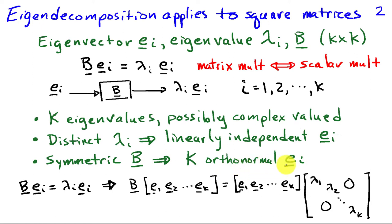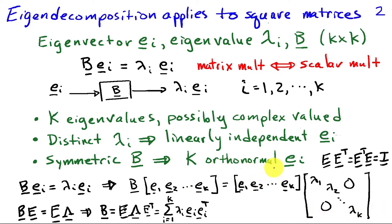Suppose that we have a set of orthonormal eigenvectors. Starting from the relationship B times E_i equals lambda_i E_i, and stacking all these equations together for i equals 1 through k, we get B·E1 = E1·lambda_1, B·E2 = E2·lambda_2, and so on. Because these eigenvectors are orthonormal, we can collect these E's into a matrix capital E. This relationship becomes B times the matrix E equals E times the diagonal matrix lambda, where lambda has the eigenvalues on the diagonal. Since these E_i's are orthonormal, E times E transpose equals E transpose times E equals the identity.